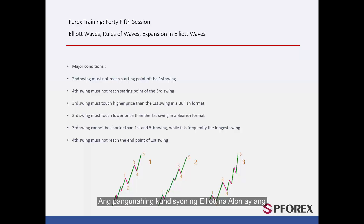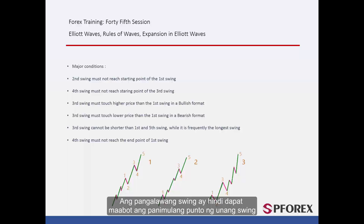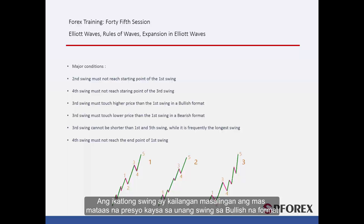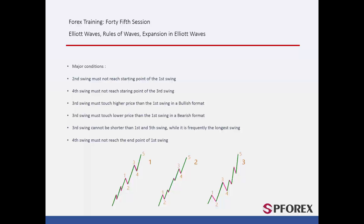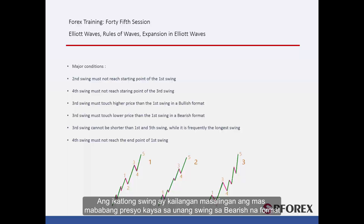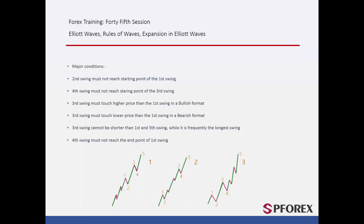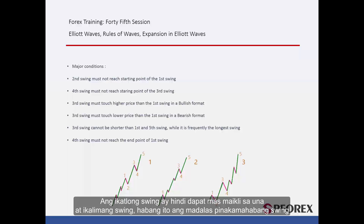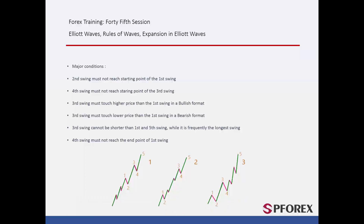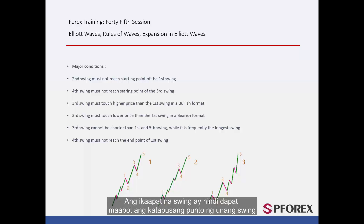The major Elliott Wave conditions are: the second swing must not reach the starting point of the first swing; the fourth swing must not reach the starting point of the third swing; the third swing must touch a higher price than the first swing in a bullish format, and a lower price than the first swing in a bearish format; and the third swing cannot be shorter than the first and fifth swing, while it is frequently the longest swing.